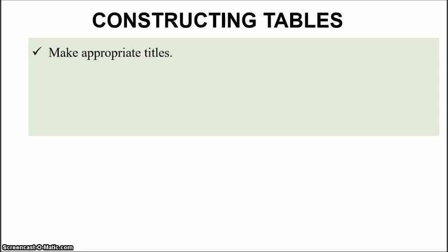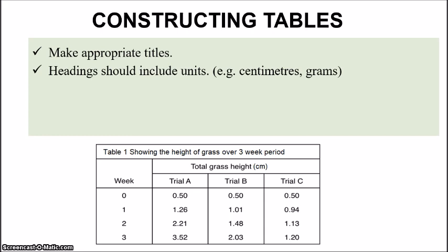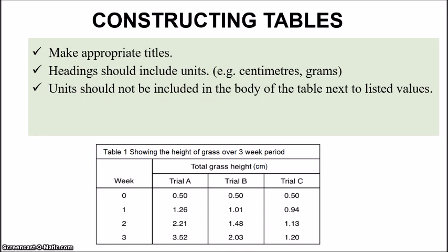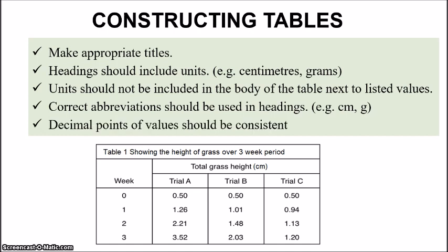Moving on to constructing tables: similar to graphs, you need to have a title — for example, 'Table one showing the height of grass over a three-week period.' In addition to an appropriate title, headings should include appropriate units such as centimeters, grams, or milliliters. Units should not be included in the body of the table next to the listed values — that is a no-no. Correct abbreviations should be used in the headings, and decimal points of values should be consistent throughout the table — in this example, consistently two decimal places.